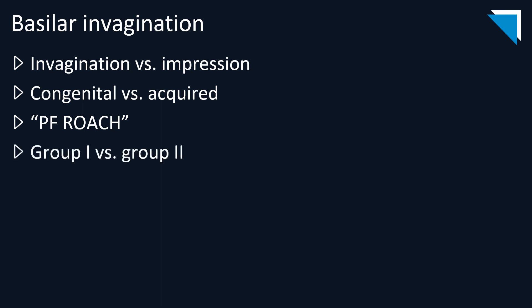For surgical management, we use a classification of group one versus group two patients. Group one patients do not have underlying Chiari malformations, whereas group two patients do. Brainstem compression in group two generally results from reduced posterior fossa volume, whereas in group one it's generally due to upward displacement of the dens.